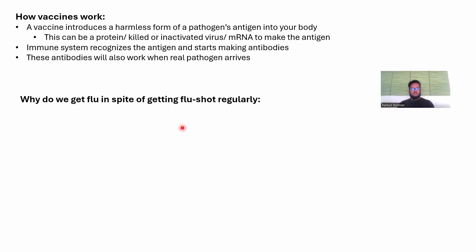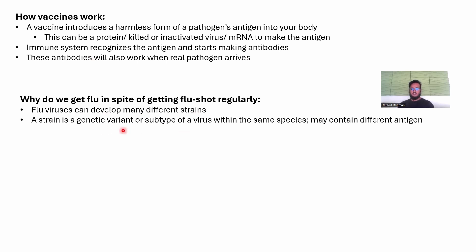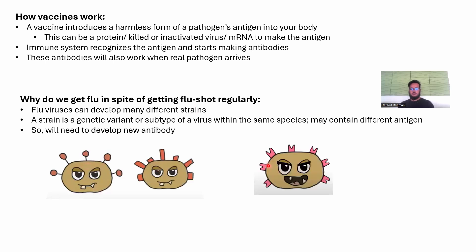We normally get flu shots every year, but still sometimes get flu. Why doesn't the antibody work? It's because flu virus can develop many different strains. A strain is a genetic variant or subtype of a virus within the same species. It can happen because of mutation, and they can contain different antigens. If a strain contains an antigen different from previous ones that the flu shot was targeting, then we cannot defend against it and we get the flu. For new antigen flus, we need to develop new antibodies.